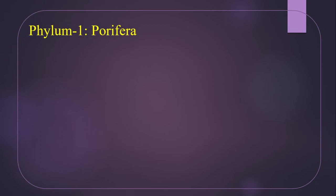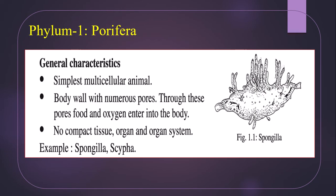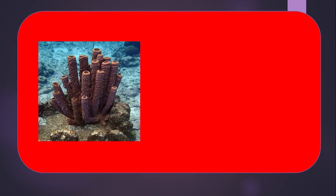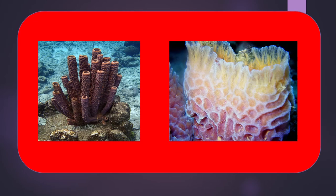Phylum one is Porifera. Members of phylum Porifera are commonly known as sponges. General characteristics: they are the simplest multicellular animals. Their body wall has numerous pores through which food and oxygen enter the body. No compact tissue, organ, or organ system is developed. Examples include Scypha, etc. There are two pictures of Porifera shown.